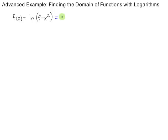So, what I'm going to recommend is first rewrite this function, factor the argument as 2 minus x times 2 plus x, and we're going to focus our attention on the argument.